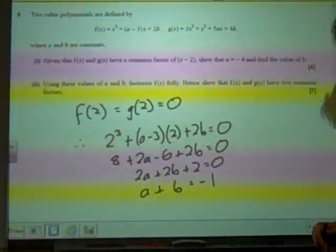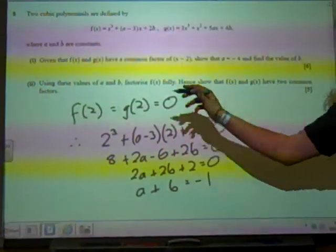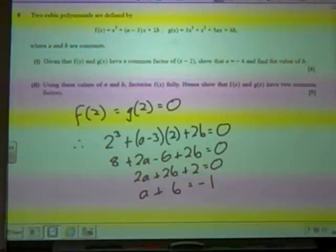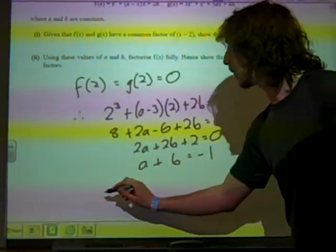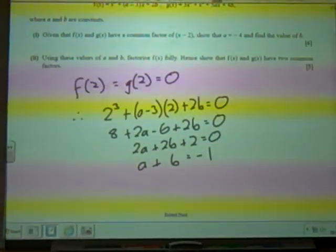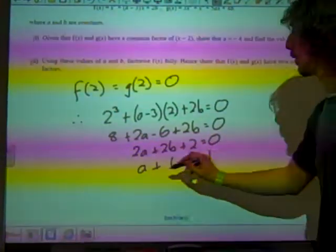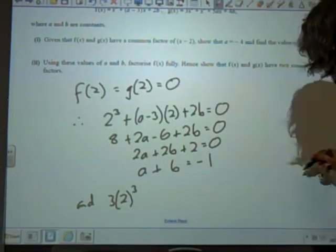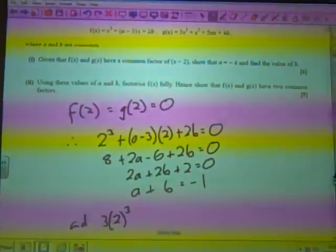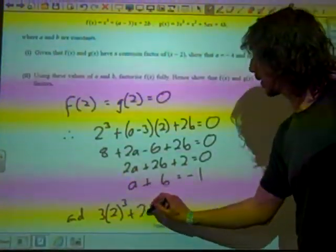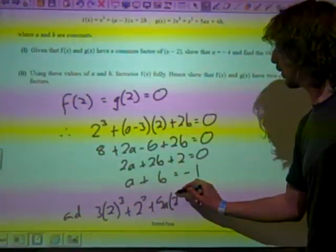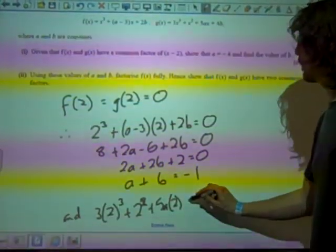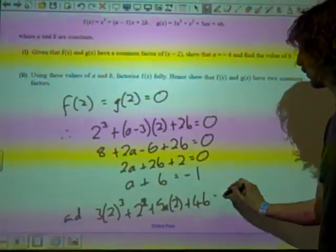That's got an equation linking a and b. That was f of 2, wasn't it? So now let's do the same thing with g of 2. g of 2 would be 3 times 2 cubed, and then we'd have plus 2 squared plus 5a times 2, plus 4b would also equal 0.